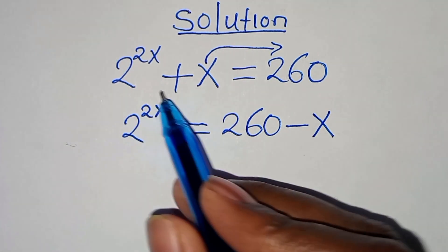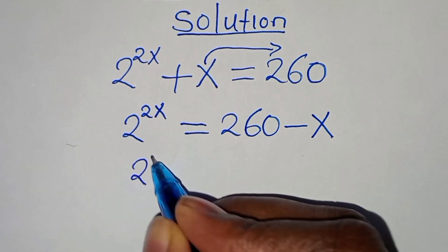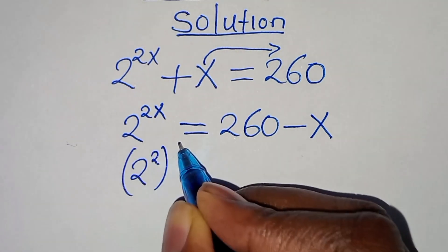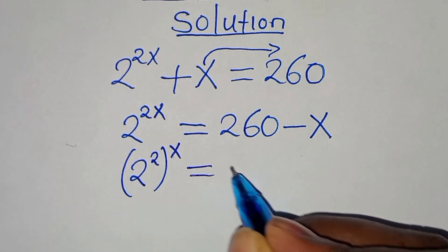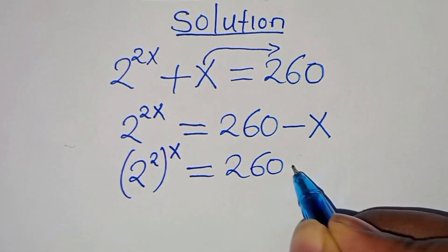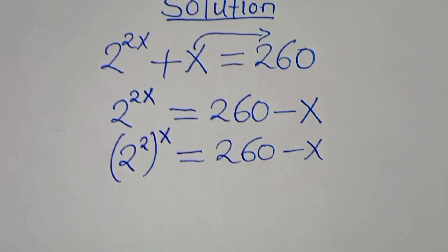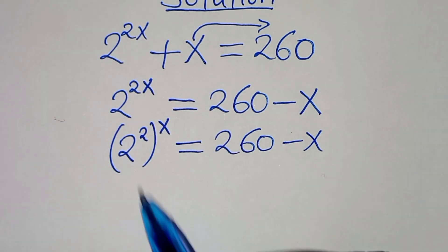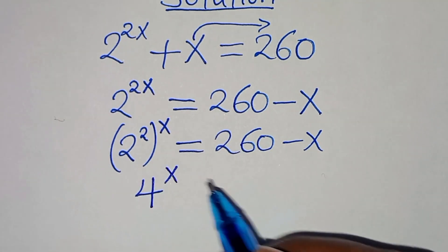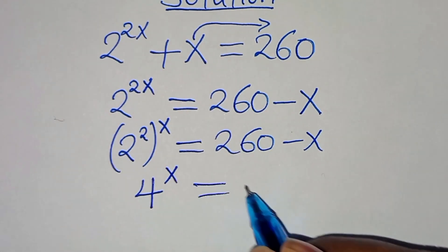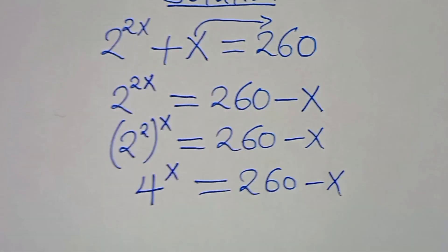Now, 2 to the power of 2x can be expressed as 2 to the power of 2, raised to the power of x, this is equal to 260 minus x. So here we have 2 squared, which is 4, so we have 4 to the power of x, this is equal to 260 minus x.